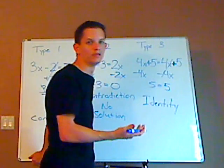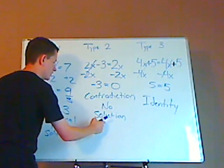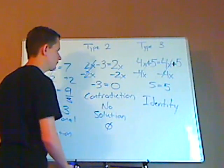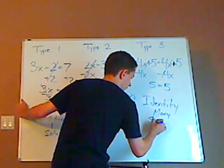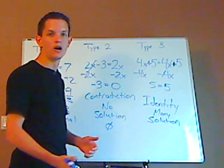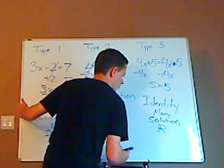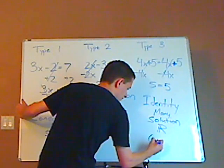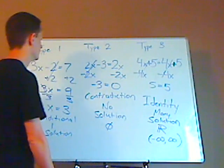Or, all real numbers. So, let me just write this here. Here, you can write this as no solution, or as the empty set. Here, there's many solutions. You can use all real numbers, which is this symbol. From negative infinity to positive infinity, so you can even use interval notation if you want to.